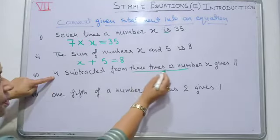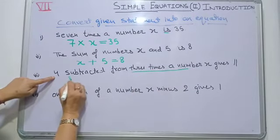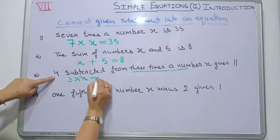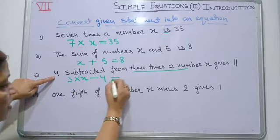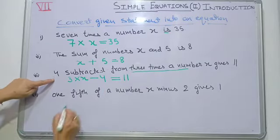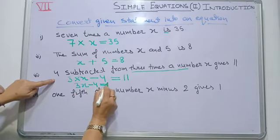Here, 3 times a number x—3 times means 3 multiplied by x. Subtract 4 from it, and it gives, 'gives' means it is equal to 11. So, in short we can write 3x minus 4 equals 11.